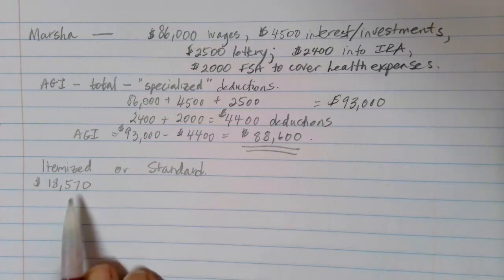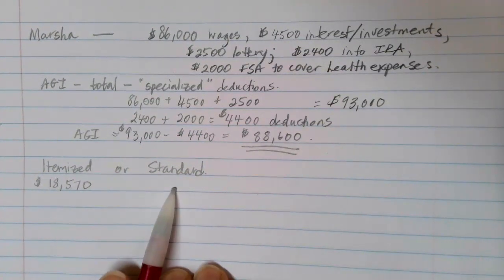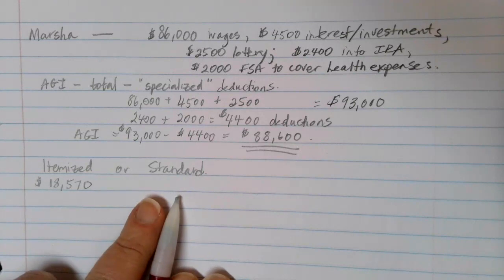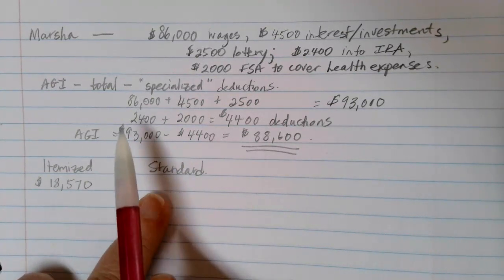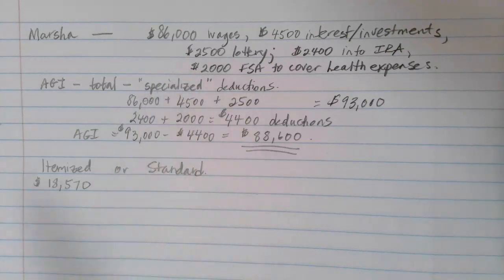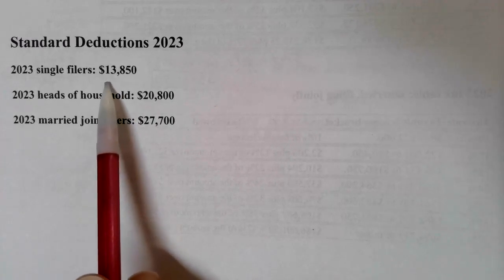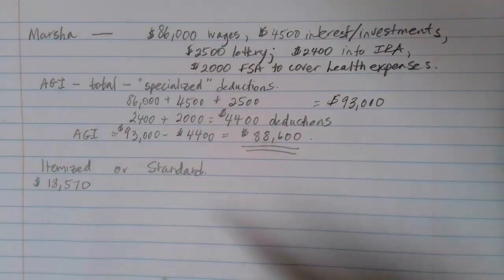Now we need to decide: is the itemized deduction going to be the best thing to use, or is the standard deduction going to be better? To tell, we have to look at what the standard deduction is for Marsha. Marsha's filing status is single, so we look at the 2023 standard deduction for single filers, which is $13,850.